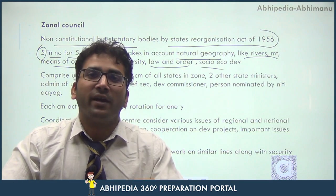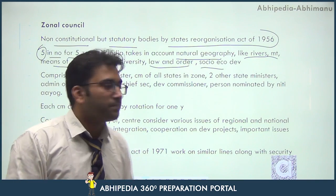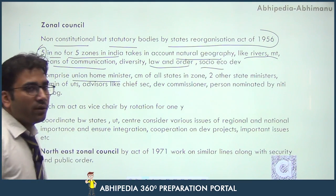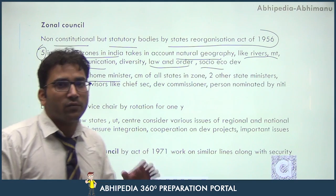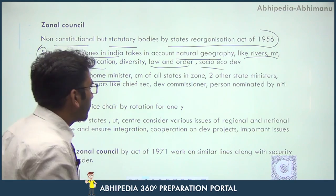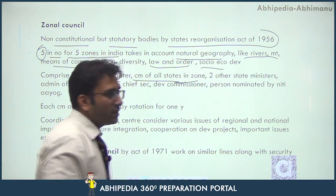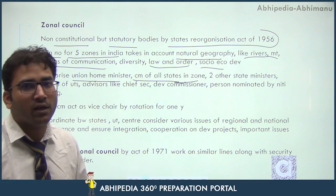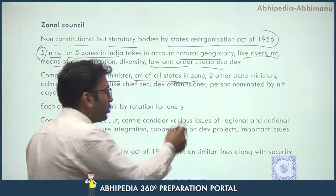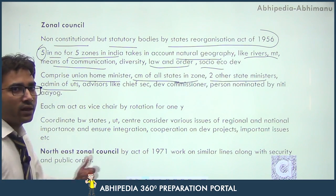The Zonal Councils comprise the Union Home Minister as chairman of all five Zonal Councils. It also includes the Chief Ministers of all states in the zone, along with two other state ministers and administrators of UTs within the zone, such as Chandigarh in the Northern Council.